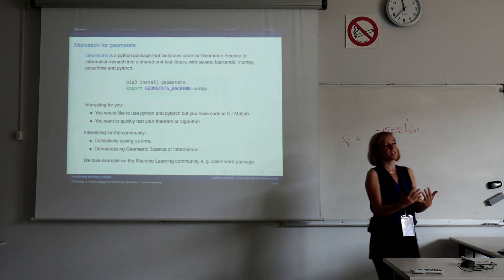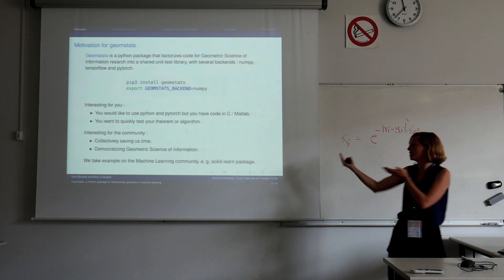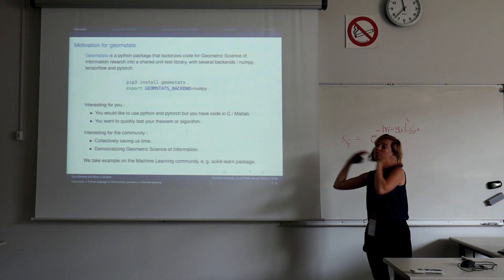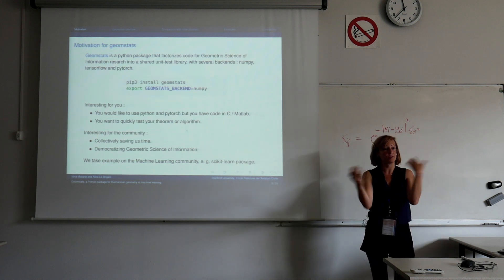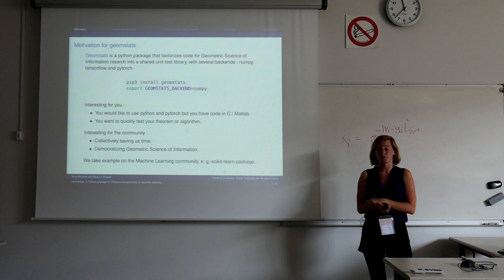If you look at the scikit-learn package that gathers a lot of machine learning algorithms, it's super useful for the community because people do not re-implement all versions of PCA whenever they need it. They go to this package, they do pca.fit and that's all. If they want to use a clustering algorithm, they do cluster.fit and it's the same syntax — not only is everything available but it's written with the same coding principles. The question is: can we do a scikit-learn or smaller version of it for the operations in geometric science of information?